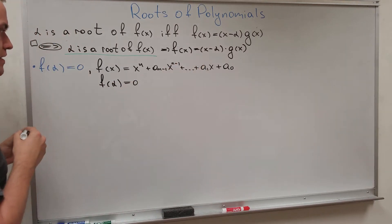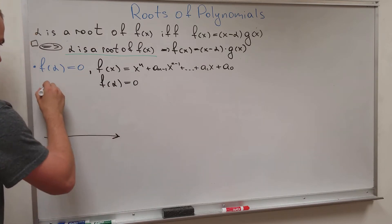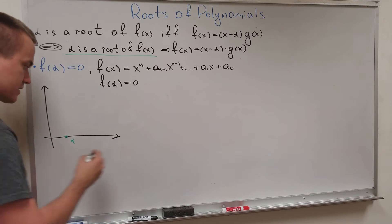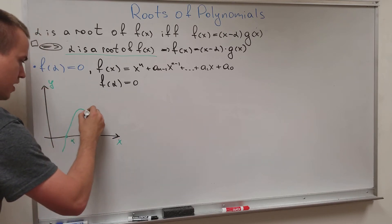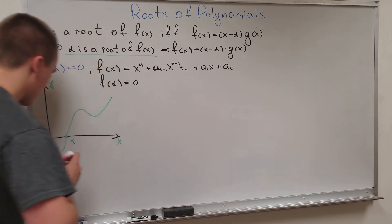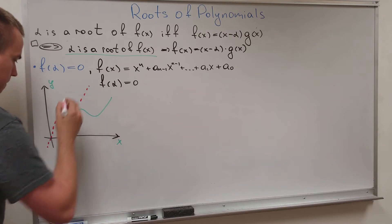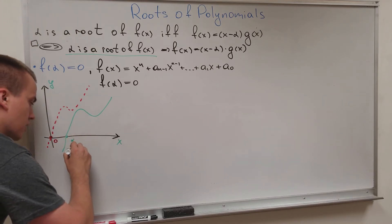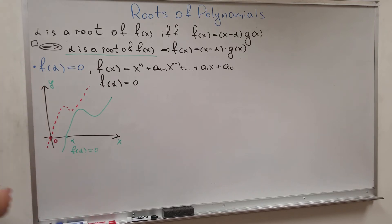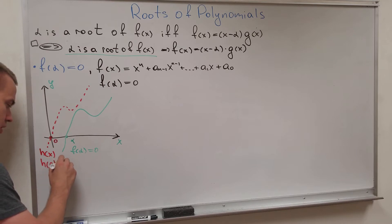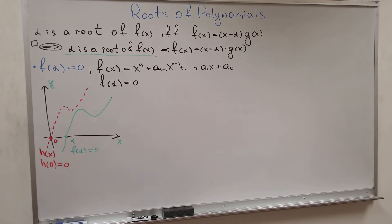How am I going to prove this? The idea is: since f(alpha) = 0, my function intersects the x-axis at alpha. I'm going to move that root to the origin by introducing a new polynomial h(x). I know h(0) must equal zero because it passes through the origin. And h(x) = f(x + alpha), so when x = 0, h(0) = f(alpha) = 0. This confirms the choice.